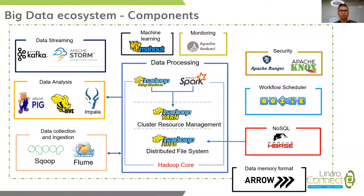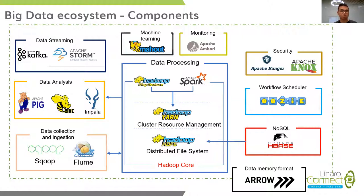Spark is another computing framework — a renovation for MapReduce, but it cannot replace it. For some use case scenarios, like huge amounts of datasets based on Parquet, which is a data format based on a storage layer, it's necessary to store intermediate computing results in the distributed storage layer and trigger disk I/O operations. So MapReduce is suitable for this use case and is always used for offline data processing.